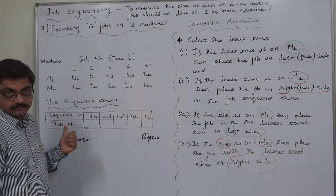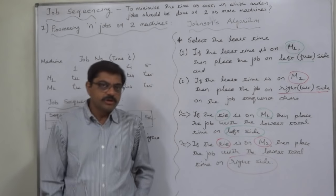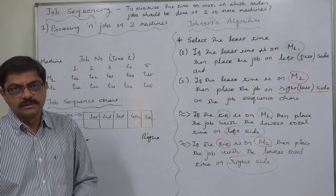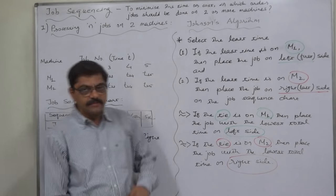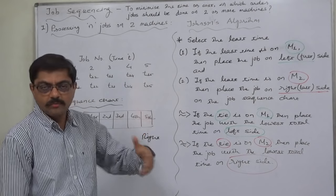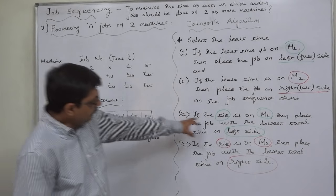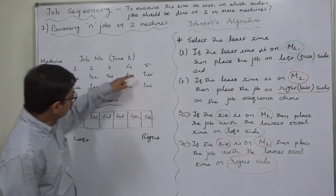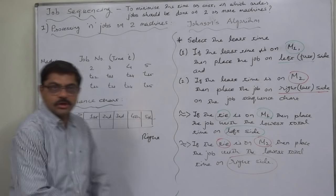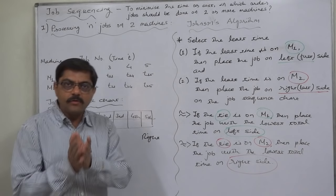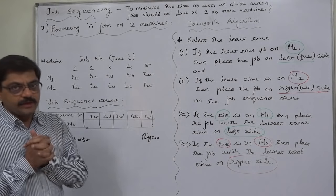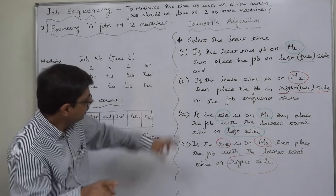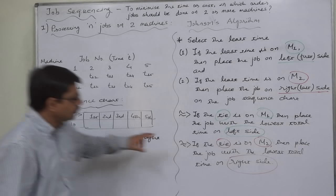Now, what about a tie? There may be a tie between two or more jobs for the least time — meaning equal least time appears on more than two machines. If the equal least time is on machine one (M1), then compare the total time of M1 plus M2 for all tied jobs, and place the job with the lowest total time on the left side.